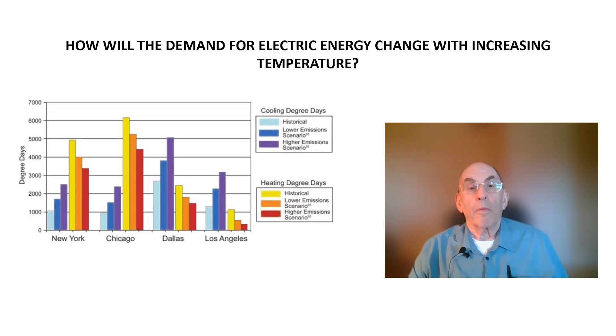We can get an idea of how the demand for electricity will change over the next 50 years or so by looking at this chart of heating and cooling degree days. The light blue, blue, and purple bars represent cooling degree days, while the yellow, orange, and red bars represent heating degree days. We are most interested in the cooling degree days because they indicate how the need for air conditioning will change as global temperatures rise.